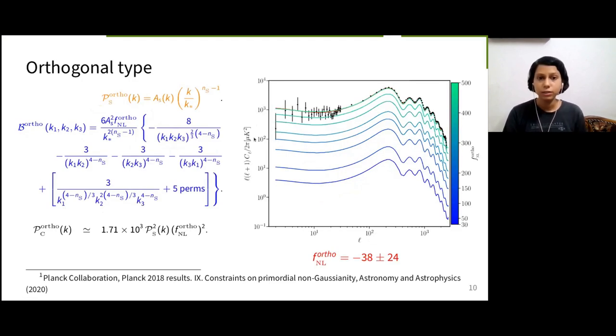Next, we have orthogonal template for bispectrum. And although the FNL orthogonal value needed to make PC comparable to PS is an order smaller than FNL local, it is not within its existing direct constraint given in the red text. We have similar story for equilateral template, which I won't be showing here. The PC for these models may not come close to PS because of the tight constraints. However, there are other models which I shall discuss where our method works better, where we do not have direct constraints on FNL.